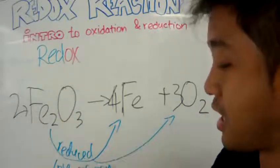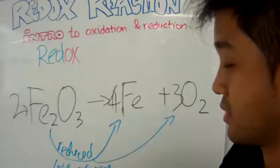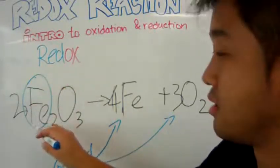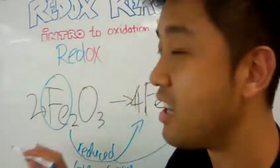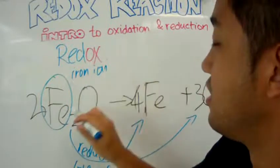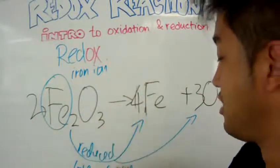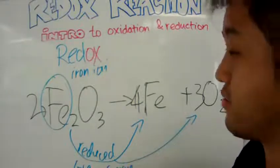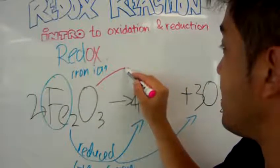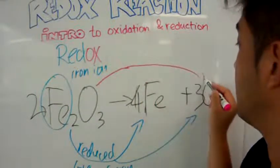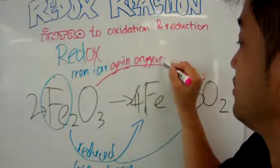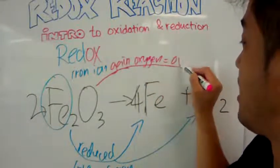But, this iron part here, each iron, iron iron, I guess you can call that. Each iron iron lost an oxygen. So, that's reduced. But, simultaneously, the oxide gained an oxygen. And so, it is oxidized.